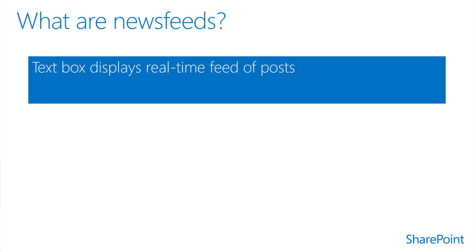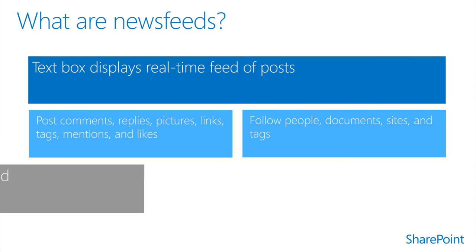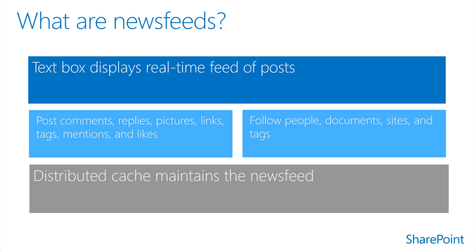In SharePoint 2013, the News Feed page in My Site continues to provide an aggregated view of activities from content and people the user is following. The feed is improved with new microblogging functionality that enables users to participate in conversations by posting comments and replies, posting pictures and links, using hashtags to define keywords that users can follow or search for, use mentions to tag users in replies and posts, indicate agreement by clicking Like, and follow people, documents, sites, and tags to customize their feed. Also in SharePoint 2013, a new in-memory cache known as the distributed cache maintains the news feed, and is installed and configured as part of the SharePoint 2013 prerequisites.